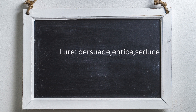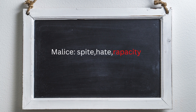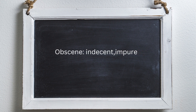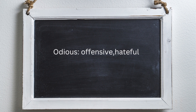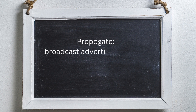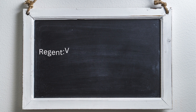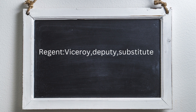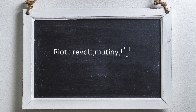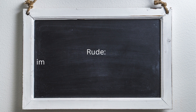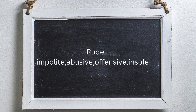Lure: to persuade, entice, seduce. Malice: spite, hate, rapacity. Obscene: indecent, impure. Odious: offensive, hateful. Propagate: broadcast, advertise, proclaim, multiply, increase. Rash: careless, tactless, indiscreet, reckless. Regent: viceroy, deputy, substitute. Riot: revolts, mutiny, or rising. Rude: impolite, abusive, offensive, insolent.